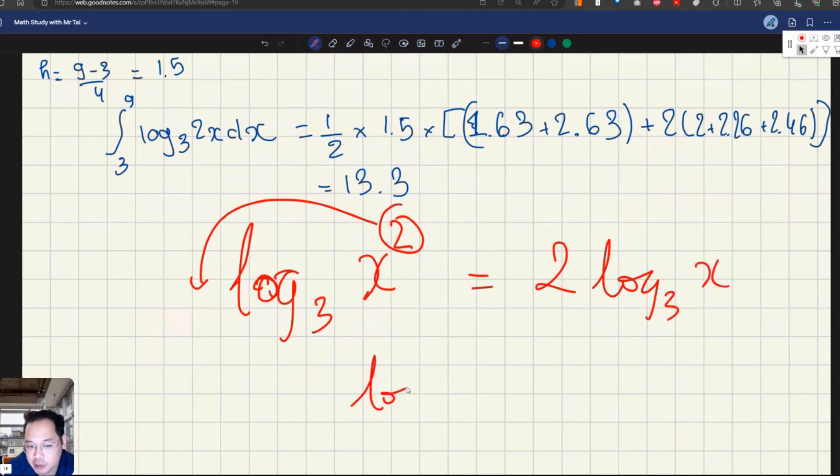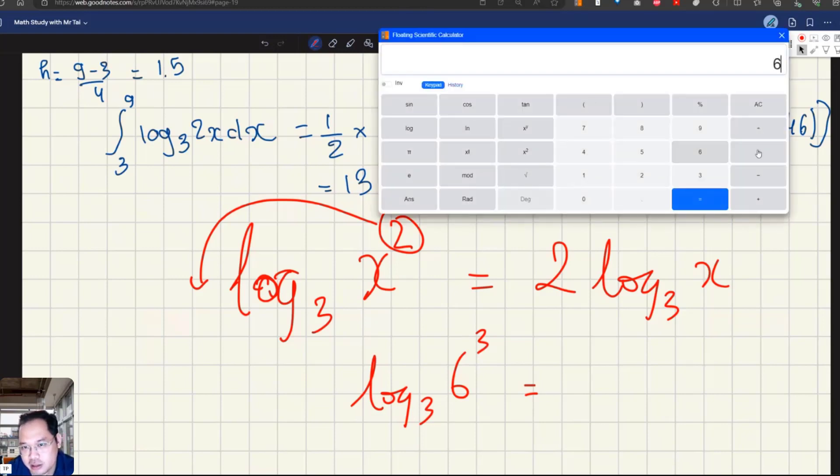We can calculate and try: logarithm base 3 of the number 6 cubed. 6 cubed, we can write as 6 × 6 × 6, which is 216.